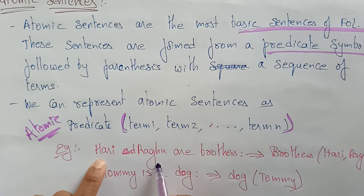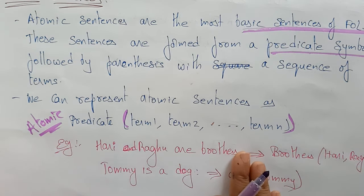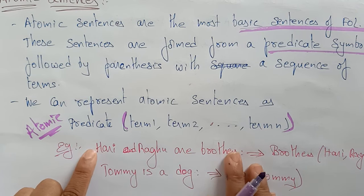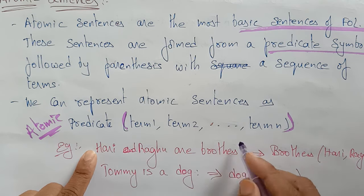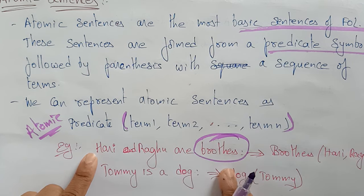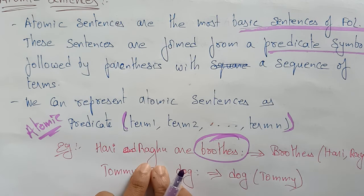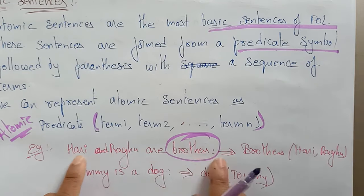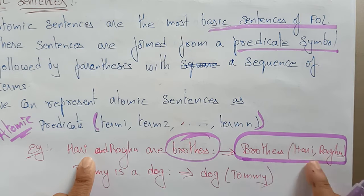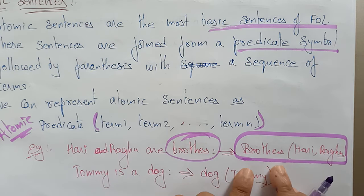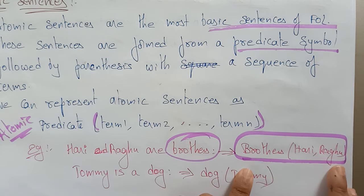Let's see an example. Take the sentence: 'Hari and Ragu are brothers.' Here, 'brothers' is the predicate and Hari and Ragu are the terms. So this statement can be represented as an atomic sentence like: Brothers(Hari, Ragu). This means Hari is a brother of Ragu and Ragu is a brother of Hari.